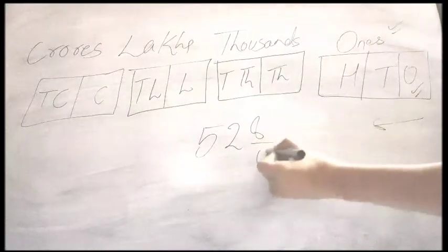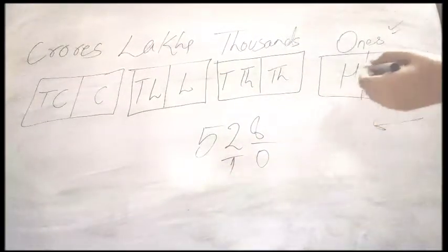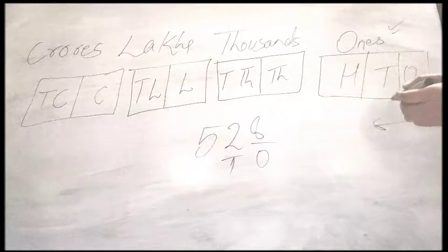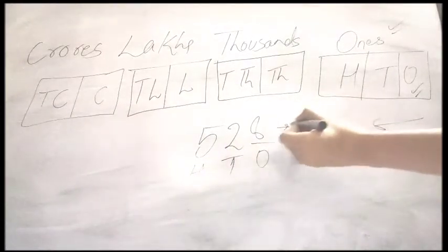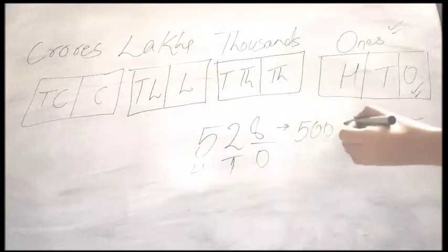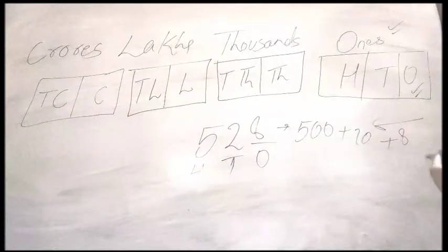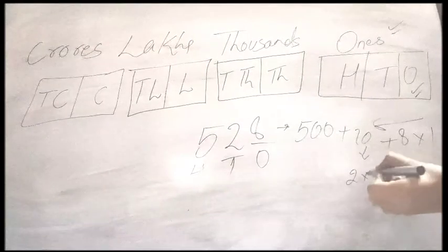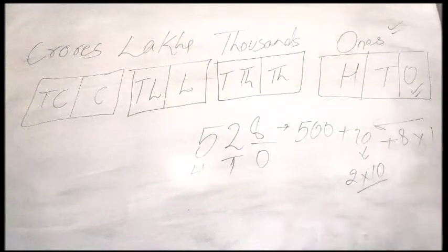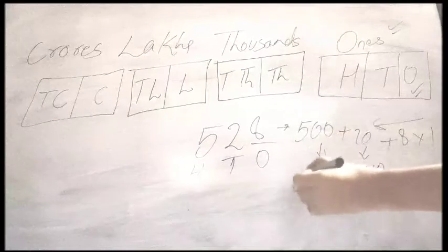So we read this as ones, tens, and hundreds. Why? Because we can write 528 as 500 plus 20 plus 8. That means 8 is a multiple of 1, 2 is 2 into 10, and 5 can be written as 5 into 100.